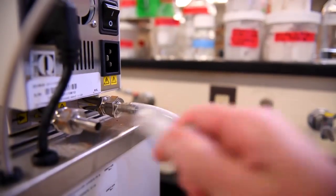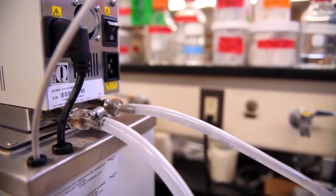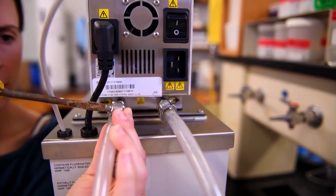Attach the heat exchanging coil to the external supply and return fittings of the circulating water bath. Ensure the connection is secure using hose clamps.